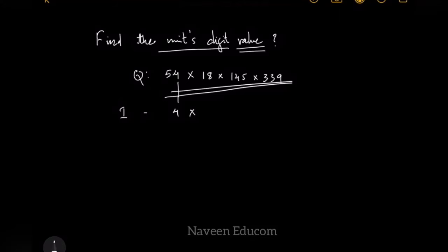That is 54 unit digit is 4, 18 unit digit is 8, 145 the unit digit is 5, and 339 the unit digit is 9.